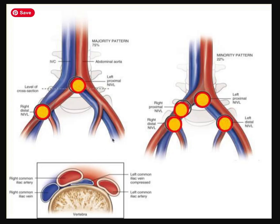In looking at people who have May-Thurner syndrome, the most common pattern involves these two compressions. A few select people are unlucky enough to have all of the compressions. I actually had three out of the four — this compression, this compression, and another further down on the left side — and those were fixed with one long stent on the left side.